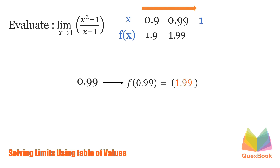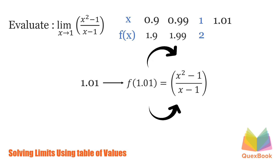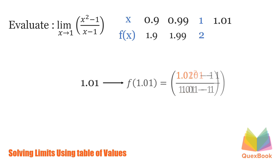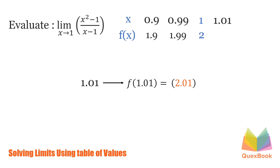So it's obvious that as our x approaches 1, the limit of our function gets closer and closer to 2. To confirm this assumption, let us try the other side. How about we plug in 1.01. We'll have 1.01 squared minus 1 over 1.01 minus 1. Simplifying: 1.01 squared is 1.0201, minus 1 is 0.0201. 1.01 minus 1 is 0.01. Dividing the function, we'll have 2.01.